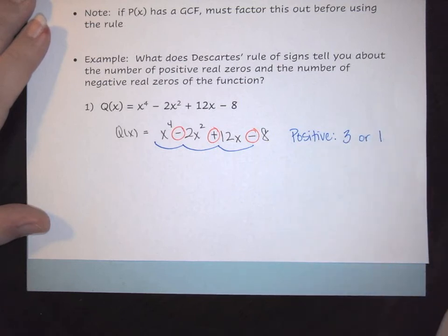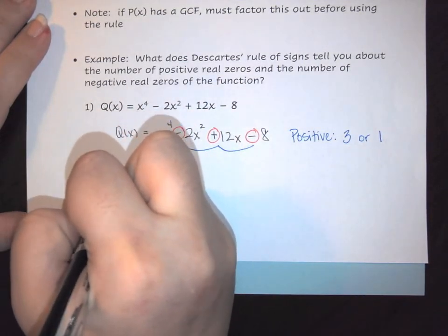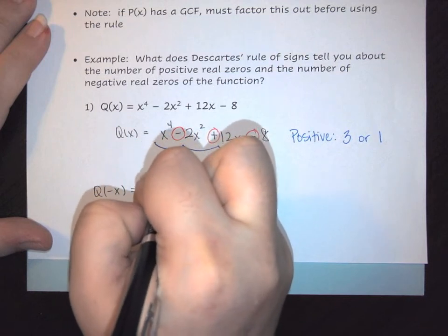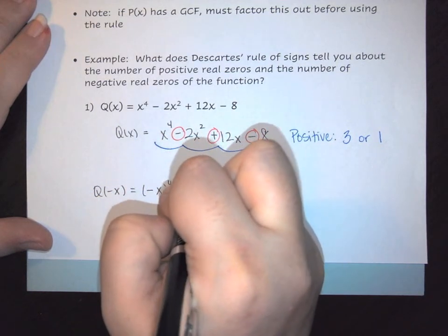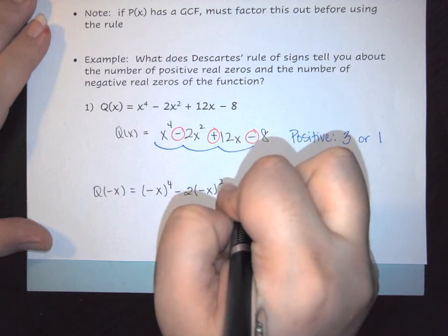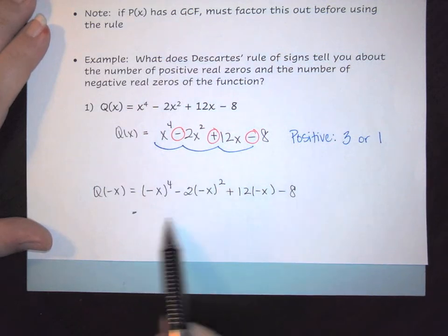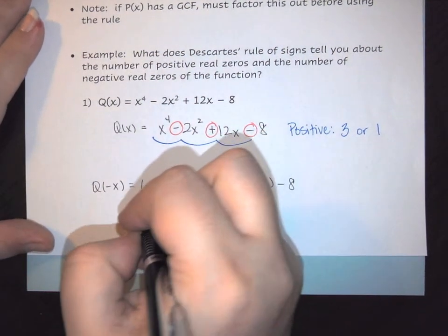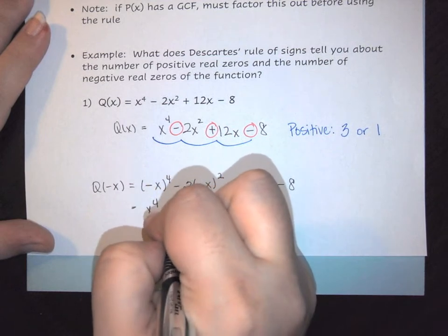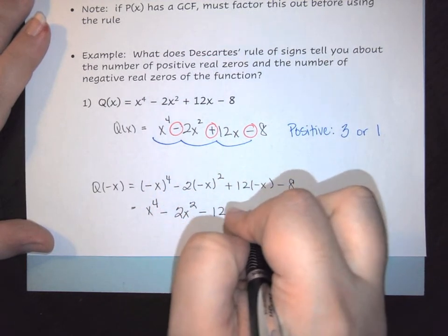Now we do it again but this time with -x. So Q(-x) = (-x)⁴ - 2(-x)² + 12(-x) - 8. Reevaluating this, we get x⁴ - 2x² - 12x - 8.